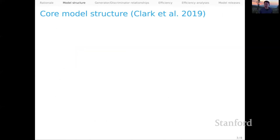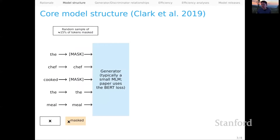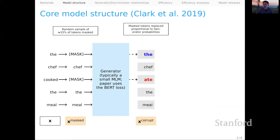So let's dive into the core model structure. We'll use a simple example. We have an input token sequence X: "The chef cooked the meal." As usual with BERT, we can mask out some of those tokens and then have a BERT-like model try to reconstruct those masked tokens. However, we're going to do that with a twist. Instead of always trying to learn the actual input token, we're going to sample tokens proportional to the generator probabilities, so that sometimes the actual token will be input, and sometimes it will be some other token.